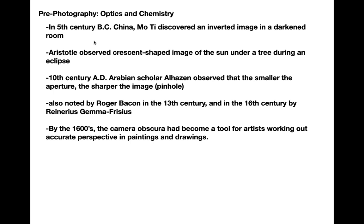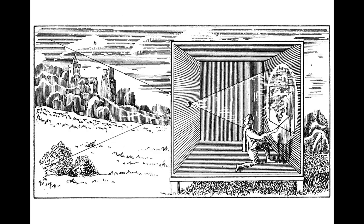They had taken it from just being this odd thing they noticed to actually taking advantage of the phenomenon and putting it into a tool they could use. They constructed a box with a small opening in it that they could use to make accurate drawings. Here's an old illustration of how that principle works — you've got light coming in through a small aperture, and across from it you see the image upside down and backwards, with a canvas or paper affixed to the wall where an artist can start to draw and trace it out more accurately.